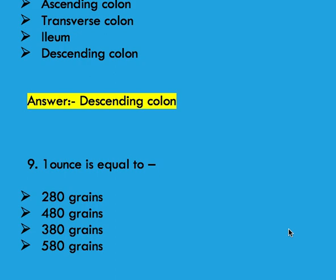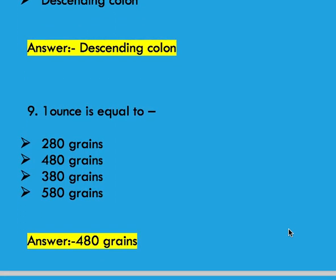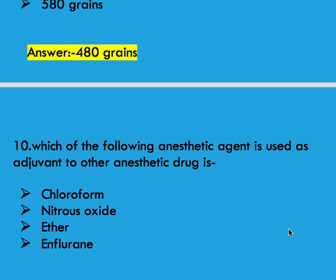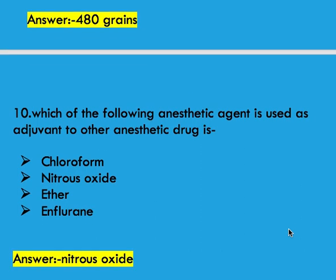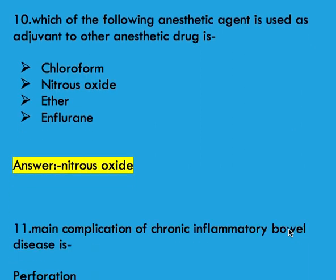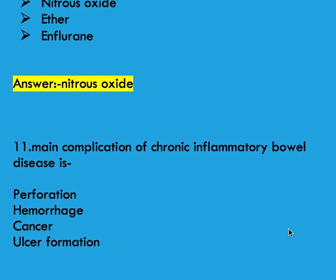Next question: one ounce is equal to options 280 grams, 480 grams, 380 grams, and 580 grams. Right answer is 480 grams. Next question: which of the following anesthetic agents is used as an adjuvant to other anesthetic drugs? Options: chloroform, nitrous oxide, ether, and enflurane. Right answer is nitrous oxide.